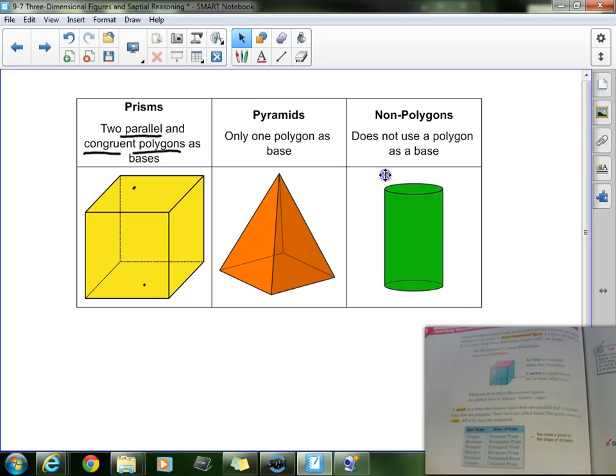The next group we're going to be talking about is pyramids. A pyramid only has one polygon as its base - let me underline that - only one polygon. So right here, I see a rectangular pyramid, because we could call that shape right there a rectangle. So it's a rectangular pyramid.